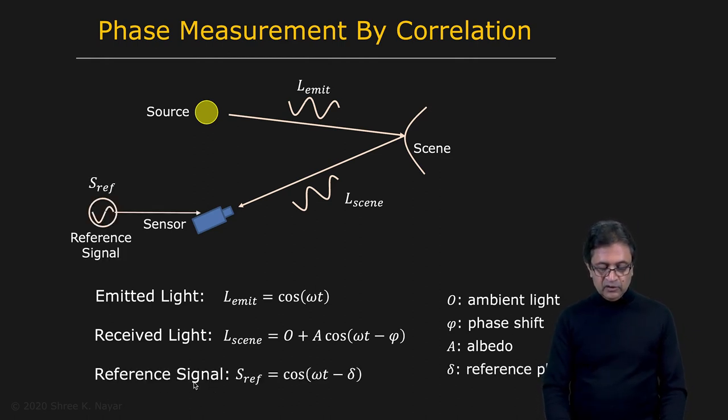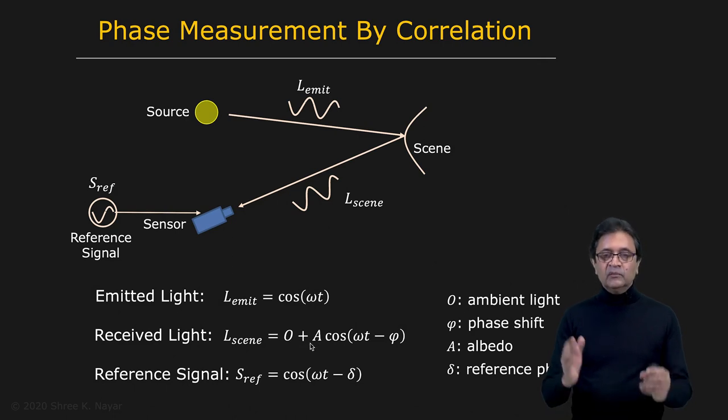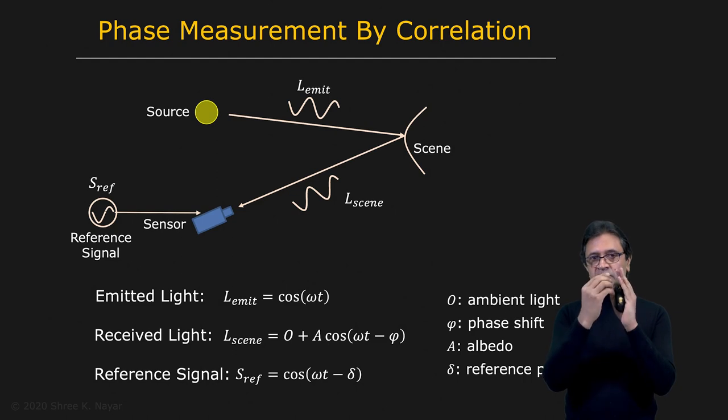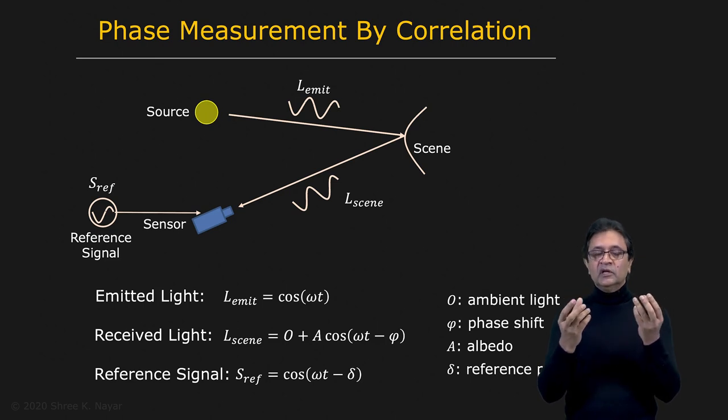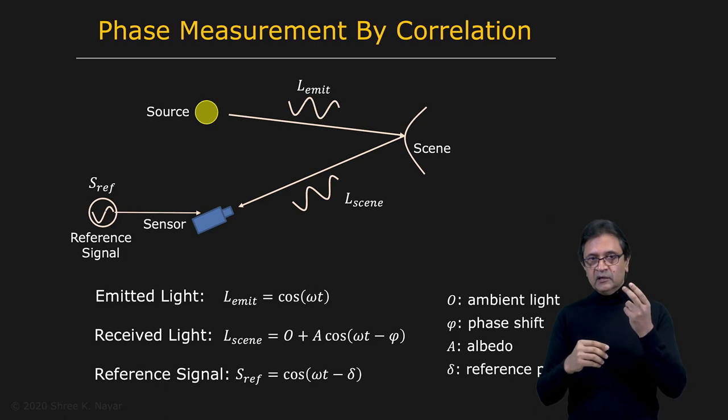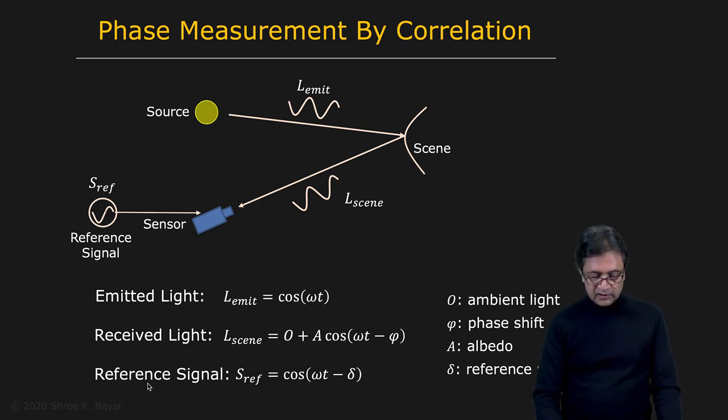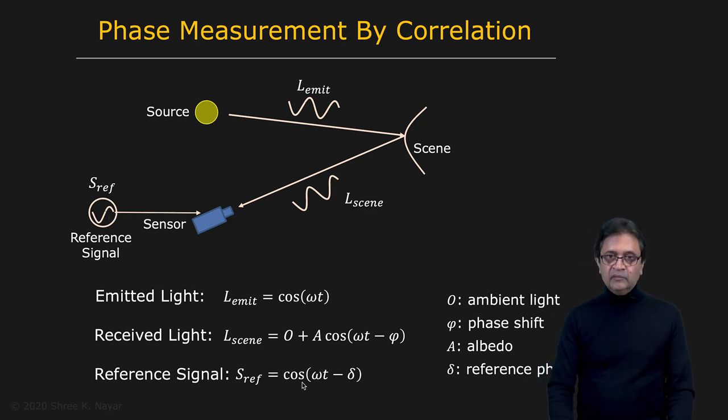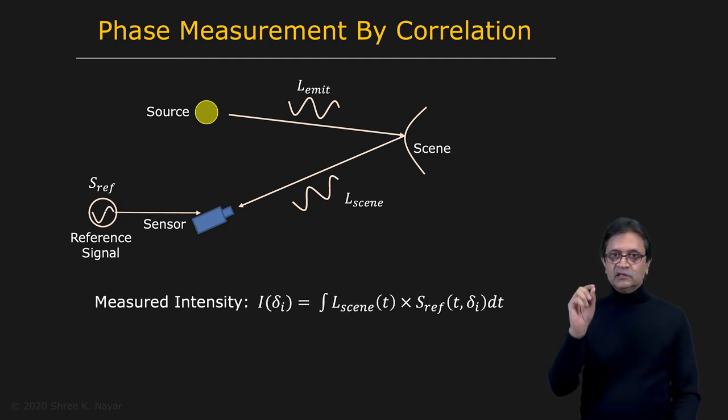Now we introduce a third function, the reference signal. We're going to use a reference signal S_ref which we multiply the received light with. We're going to correlate it, multiply the two. How do you multiply it? Essentially, it's a pixel receiving light, but you're changing the gain of the pixel continuously as you're integrating or collecting the photons. That would give you the correlation of this gain function with the incoming light function. That's the reference signal. There's some reference signal cos(ωt - δ), with the same frequency ω. δ is the reference phase—you can set it to whatever you want because you control this electronics.